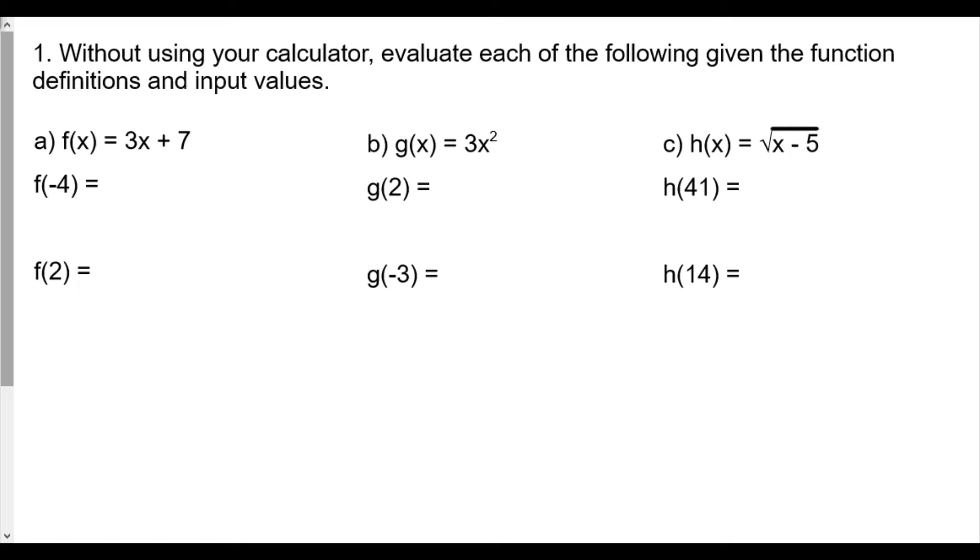As a function notation, we change the whole idea. Instead of calling it y, we use f of x, g of x, h of x so that we don't confuse what everything is. It looks like y though, so they are outputs for a particular rule. For number one, without using your calculator, evaluate each of the following given the function definitions and input values. f of x is the rule for the function f, which basically says 3x plus 7.